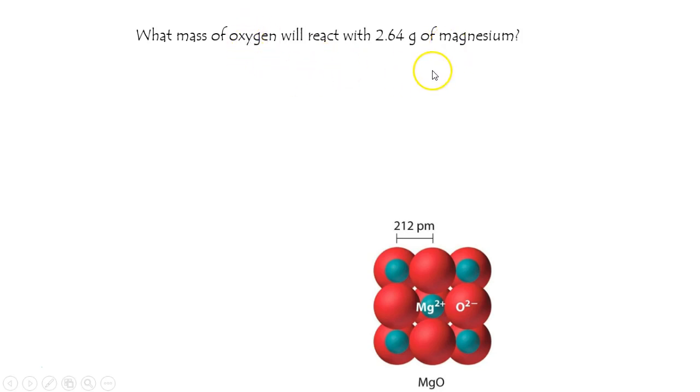It's O2, and it'll form MgO, since magnesium forms a plus 2 ion. It's in the second column, and similarly, oxygen forms a minus 2 ion. Balancing it...